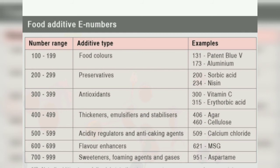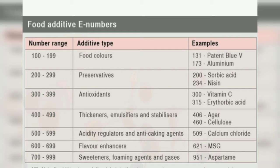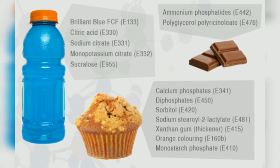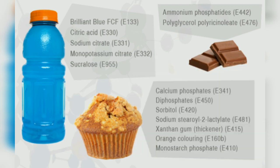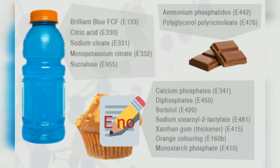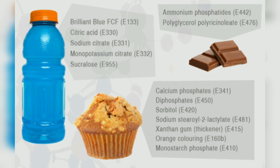Here is the list of food additive E numbers: 100–199 are food colors, 200–299 are preservatives, 300–399 are antioxidants, and so on. For example, Brilliant Blue is E133 (a food color), and sucralose falls between 700–999 as a sweetener. Similarly, other E numbers replace the chemical and common names of particular food additives.